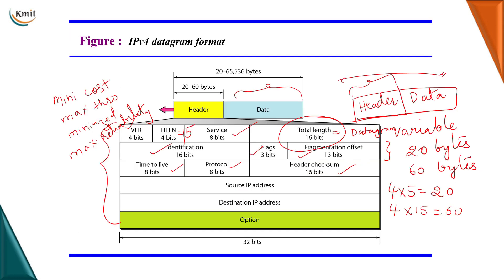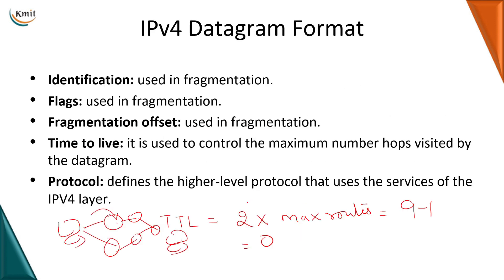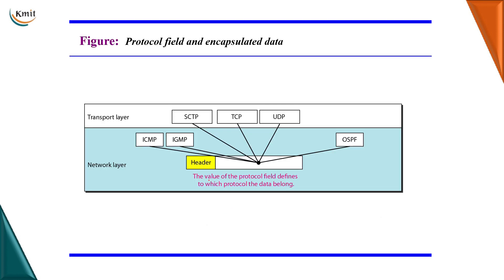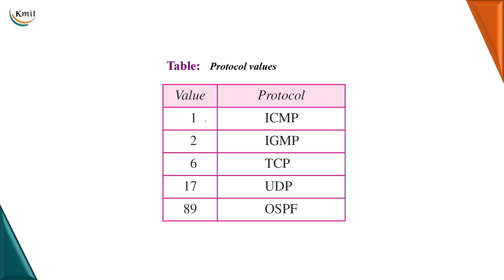The protocol field is an 8-bit field that defines the higher-level protocol using the services of IPv4. The services can be used by ICMP, IGMP, and OSPF at the network layer, and SCTP, TCP, and UDP at the transport layer. If the value is 1 — ICMP; 2 — IGMP; 6 — TCP; 17 — UDP; 89 — OSPF. You need not memorize these values; you only need to know which protocols use the services of IPv4.